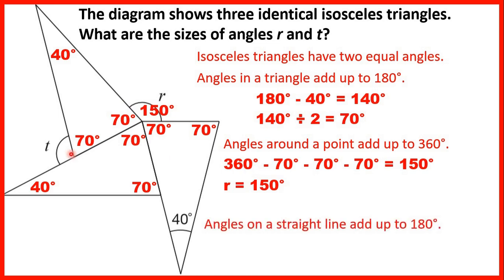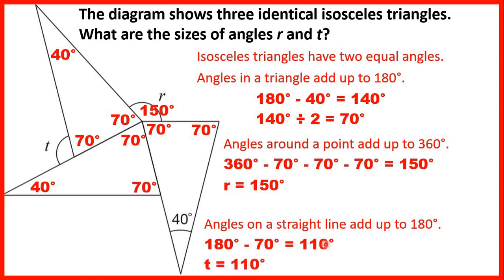We can find angle T by remembering that angles on a straight line add up to 180 degrees. So if we subtract 70 from 180, that tells us that angle T must be 110 degrees.